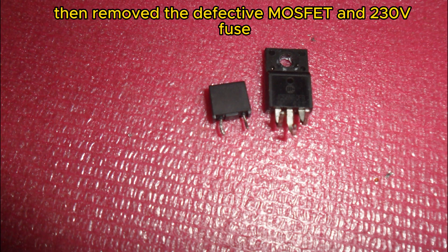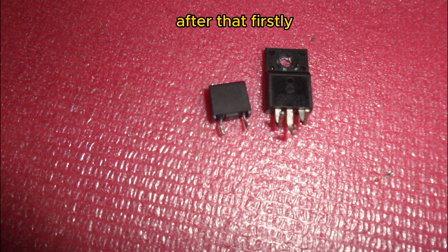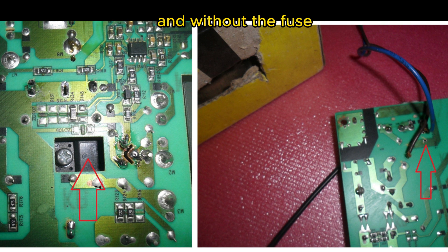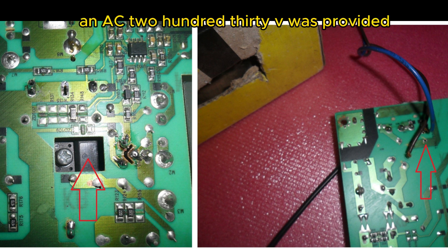Then removed the defective MOSFET and 230V fuse. After that, firstly, only the new 8N60 MOSFET was installed and without the fuse, a 75W bulb was installed on the two ends and AC 230V was provided.